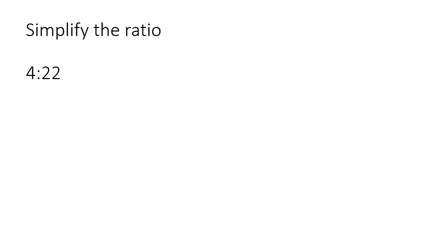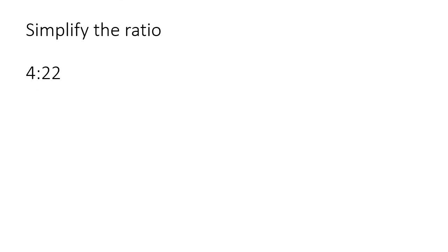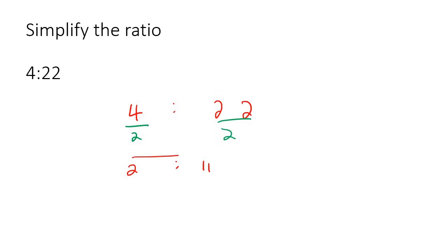I'm going to show you three more examples, and some of them are going to include decimals. When you have the number four and 22, the number two can go into both. I always like to start with small numbers — the number two can go into both. So we divide by two, and that's going to give you two and 11. And you cannot go any smaller than that.